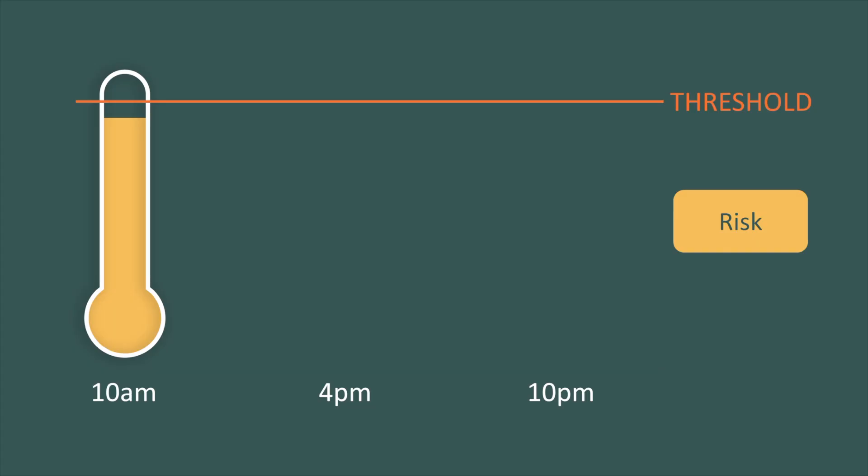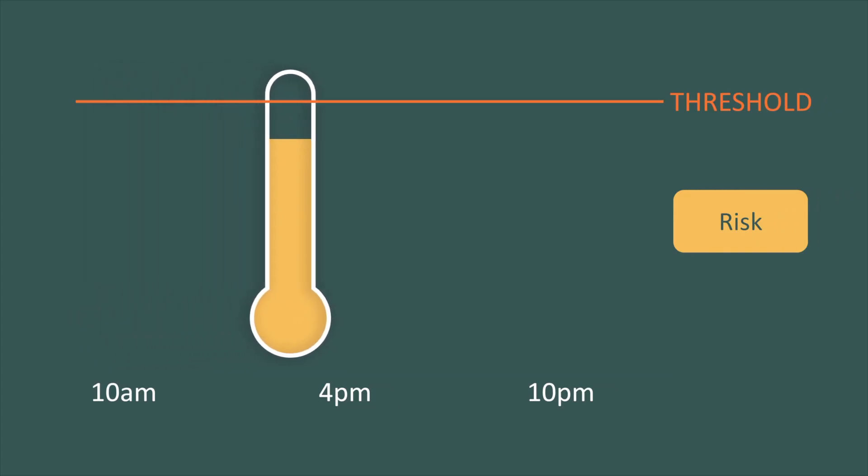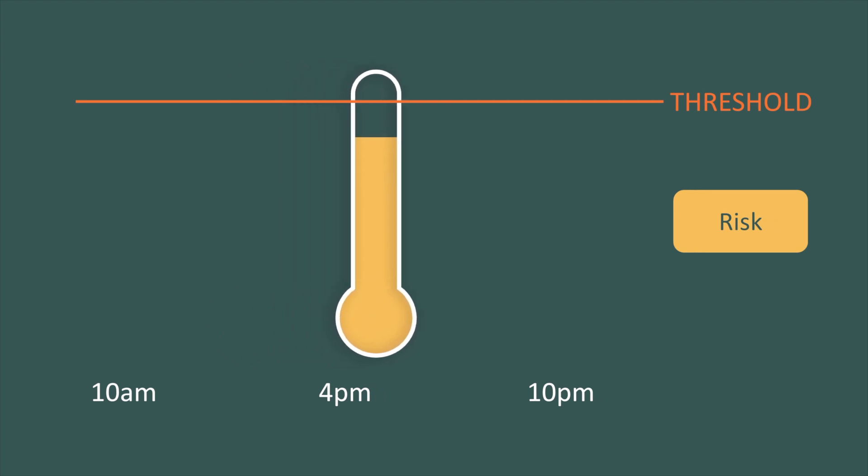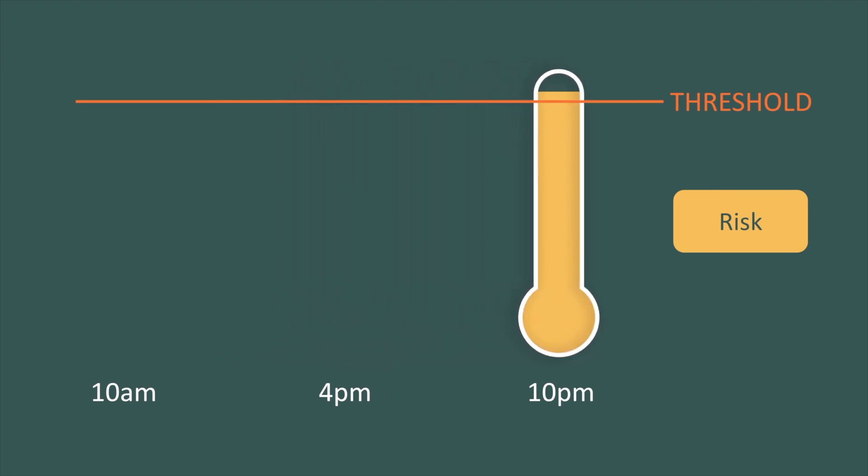Risk exposure varies along the day. It decreases from 10 am to 4 pm, then it increases from 4 pm to 10 pm. At 10 pm, the risk meter reading is above the threshold, so symptoms have appeared.